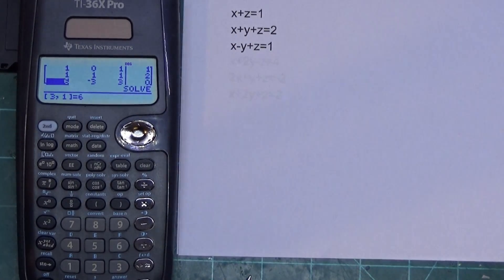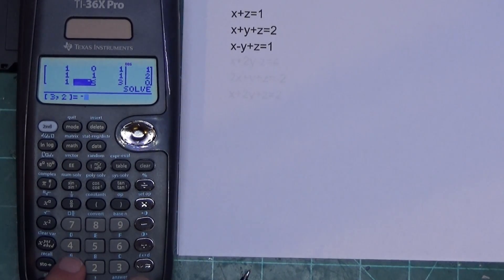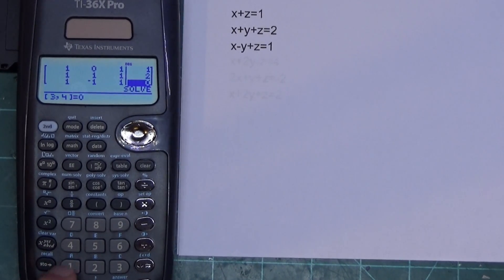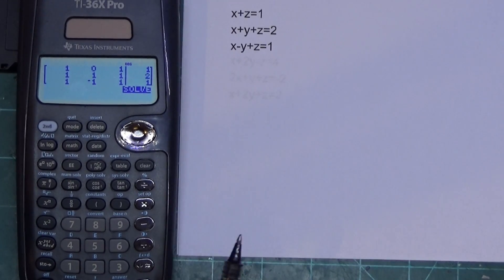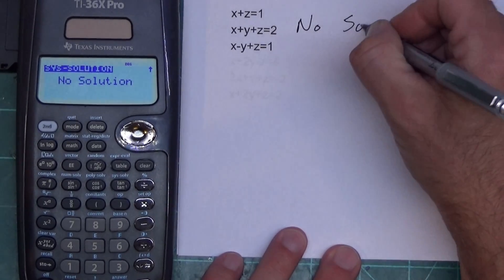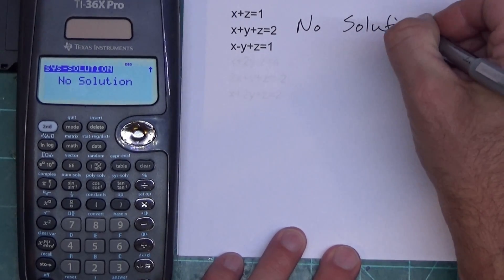I'm going to put 1, enter, negative 1, enter, 1, enter, and 1, enter. And remember when you put the negative, don't push the minus button. I'm going to hit solve. Now this time it tells me no solution because there is no solution. When you're working with a 2x2 system solver, it will say no solution like that.